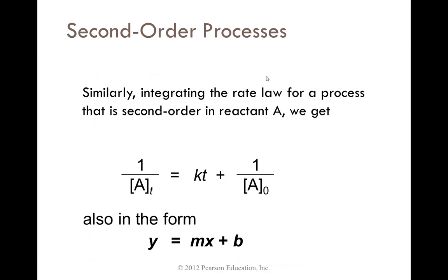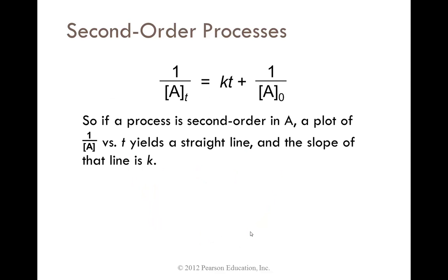Similarly, integrating the rate law for a process that is second order in reactant A, we get 1 over A, where this is the Y, k is still the slope, and 1 over A naught is the intercept. So if a process is second order in A, a plot of 1 over A versus time yields a straight line, and the slope of that line is k.